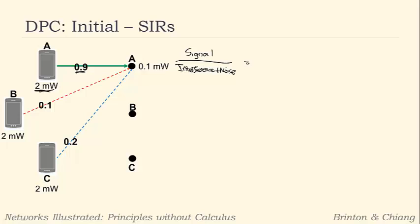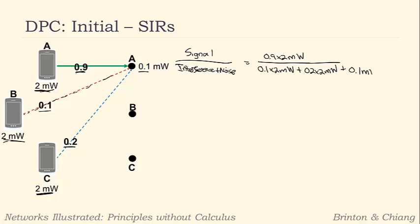So the signal is 0.9 times 2 milliwatts. The first interference term is 0.1 times 2 milliwatts coming from B, and from C we have 0.2 times 2 milliwatts. Don't forget we also add the noise at the receiver. Multiplying this out gives 1.8 milliwatts on top and 0.7 milliwatts on the bottom. The units cancel, so the signal-to-interference ratio is a unitless quantity — 1.8 divided by 0.7 gives us 2.57.